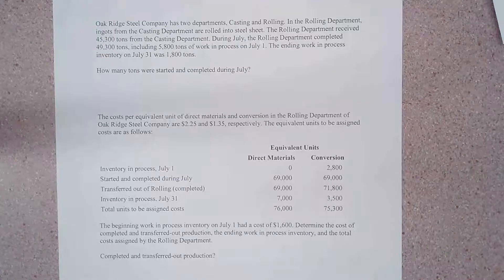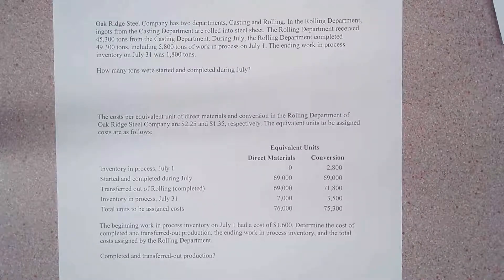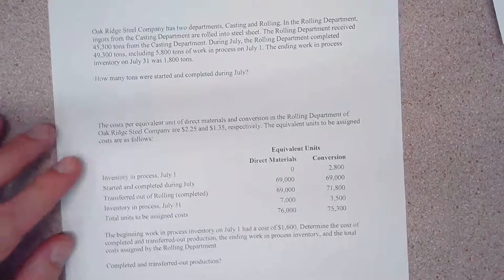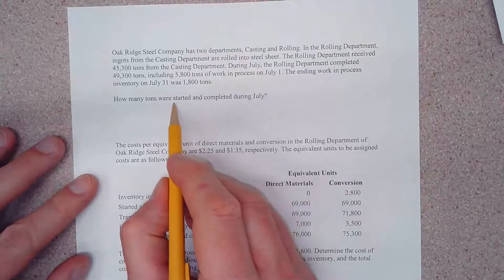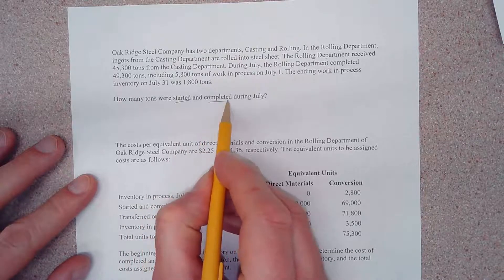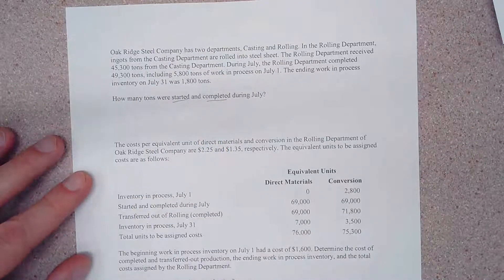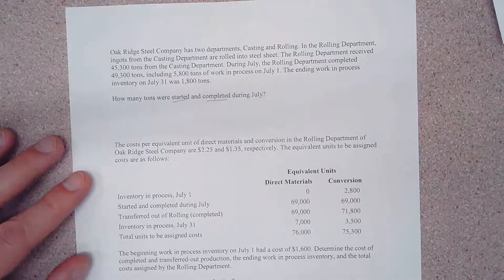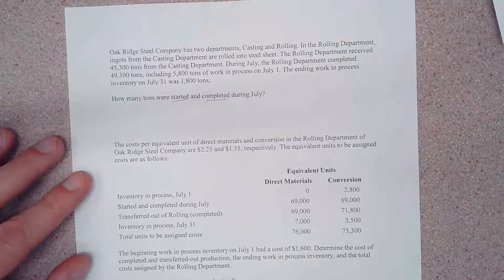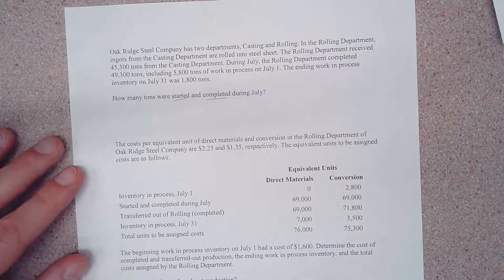The question asks: how many tons were started and completed during July? We want to understand that we're looking for tons that were both started AND completed in July. If they weren't started in July, we don't count them, and if they weren't completed in July, we don't count those either. There are two different ways we can solve this.